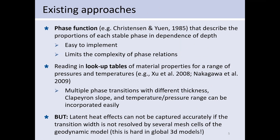There have been a number of different approaches for implementing phase transitions in geodynamic models, all implemented in ASPECT to some extent. The simplest is the phase function approach, where the phase transition is described by the proportions of each stable phase as a function of depth, for example using a hyperbolic tangent. This is easy to implement and easy to modify parameters like the Clapeyron slope. A more recent approach uses lookup tables based on mineral physics material properties over a range of pressures and temperatures, automatically including all phase transitions with different Clapeyron slopes.